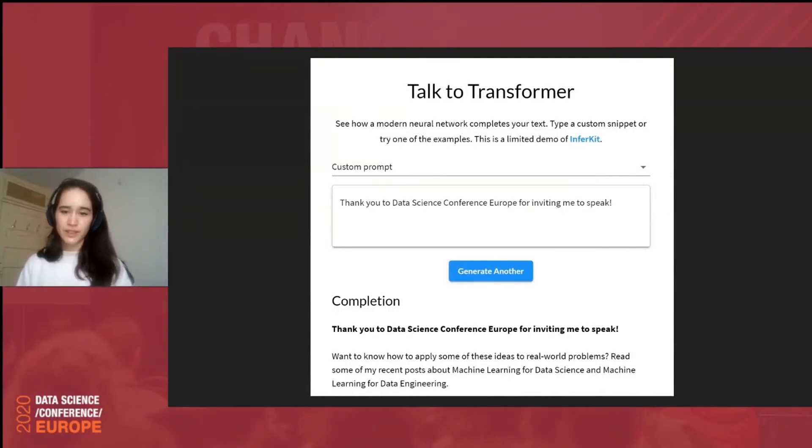So, one fairly recent development in natural language processing is the development of transformers, which at a high level is a language model that models the interdependencies between words and sentences. Now, training this sort of model on a large text corpus, it yields some pretty interesting results. For example, you can use models like transformers for language generation.